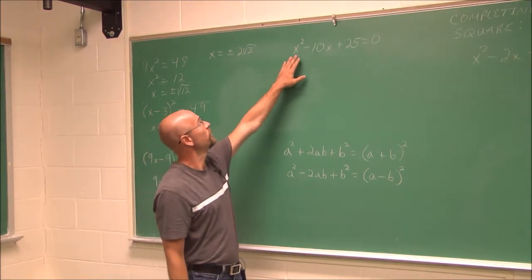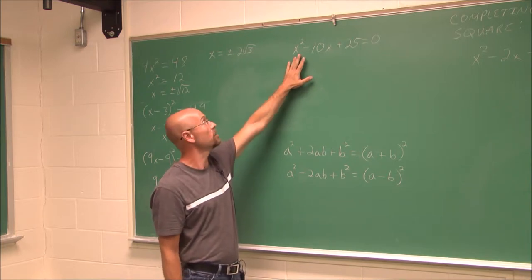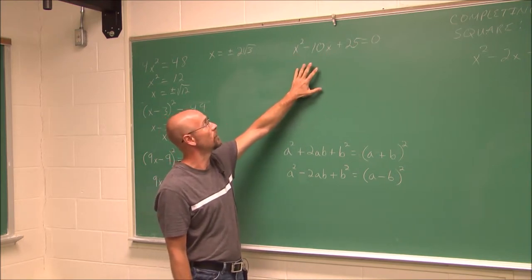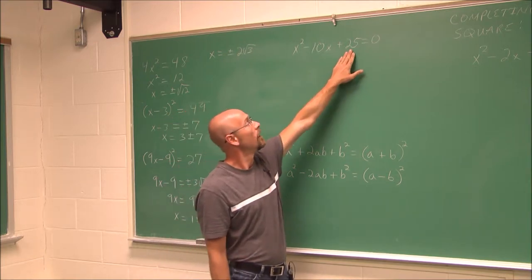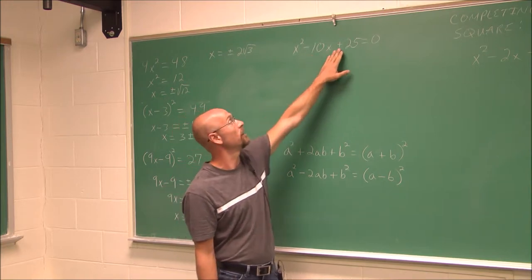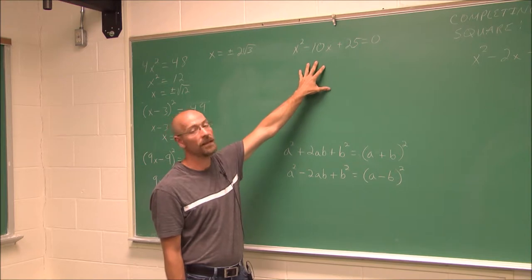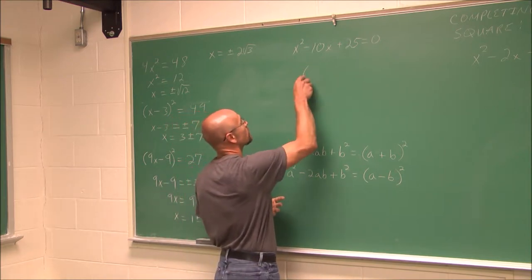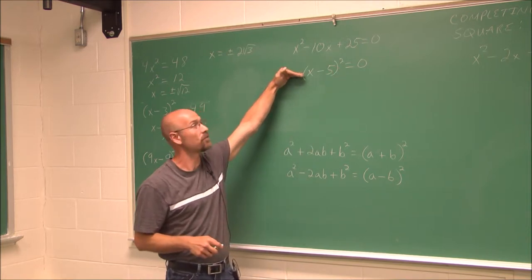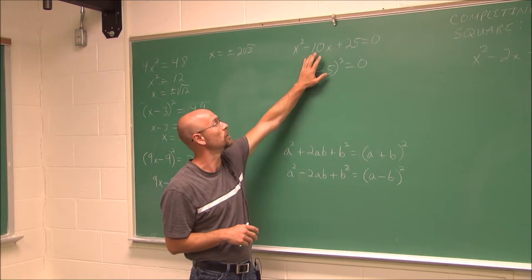Here we have x squared minus 10x plus 25 equals 0. I cannot isolate a squared factor because I have the variable in two different locations — one squared, one not. Hopefully our factoring skills are sharp: the factors of 25 that sum to negative 10 would be negative 5 times negative 5 — they have the same sign to give a positive, and combine to give a negative value. This is a perfect square trinomial, and if we can identify that, it helps us solve. It factors to x minus 5 quantity squared.